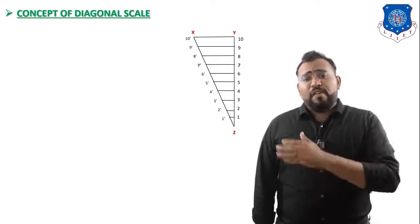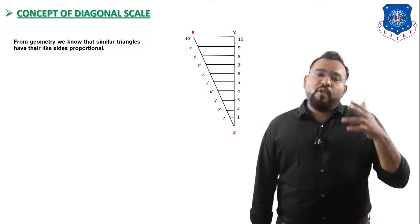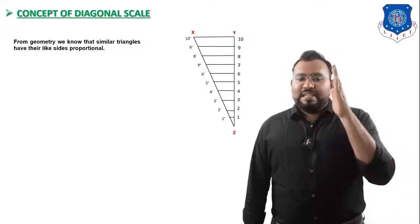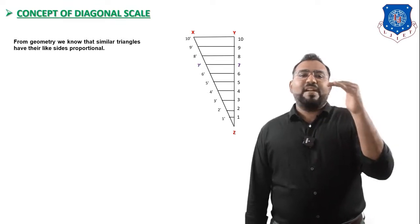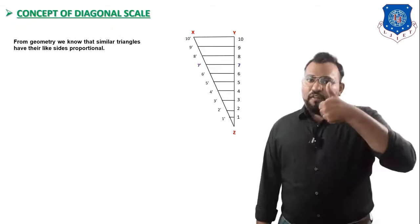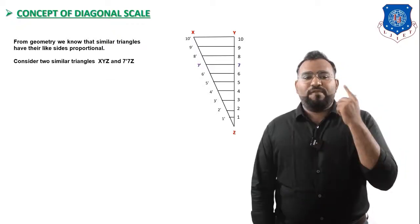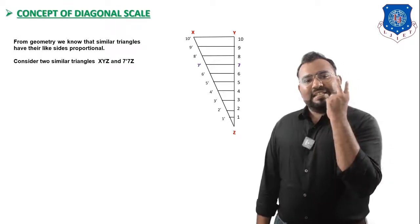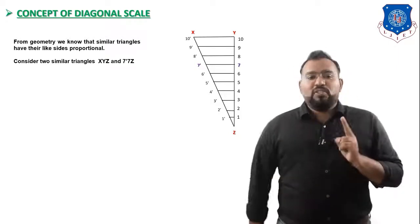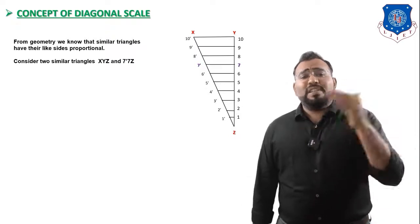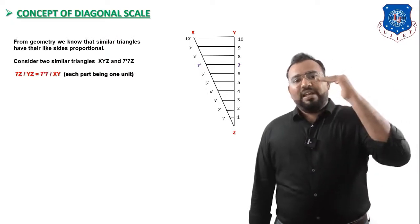Now we apply the law of similar triangles to this figure. We have two triangles: triangle XYZ and triangle 7-dash, 7, Z. By the similar triangle rule, we write: 7Z upon YZ equals 7-dash-7 upon XY. Making 7-dash-7 the subject: 7-dash-7 equals (7Z / YZ) multiplied by XY.